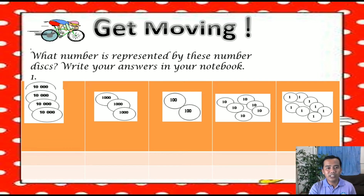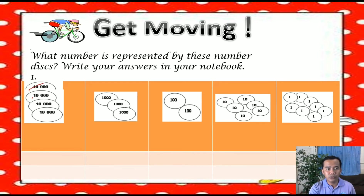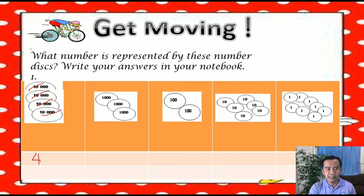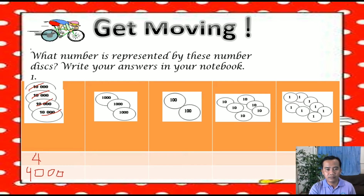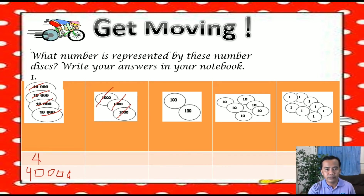Let us continue. What number is represented by this number disk? Let us start. We have 1, 2, 3, 4 — we have 4 ten-thousand disks, and this is equivalent to 40,000. How many 1,000 disks do we have? 1, 2, 3 — we have 3.